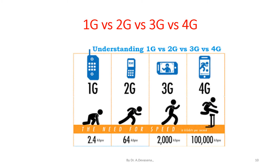In this analogy, imagine a human starting to run. 1G represents the human preparing to run — the speed of 1G is around 2.4 kbps. 2G has a speed of 64 kbps — the human has started running. 3G has a speed of 2000 kbps (that is 2 Mbps) — the human is running. 4G has a speed of 100,000 kbps (that is 100 Mbps) — the human is running very fast.